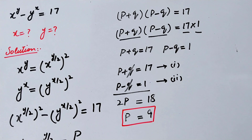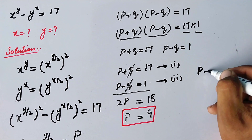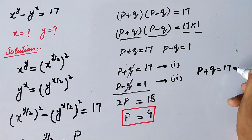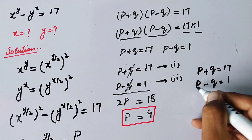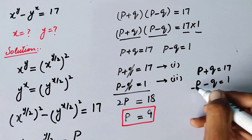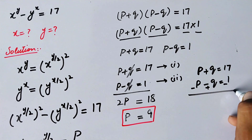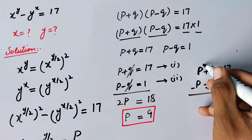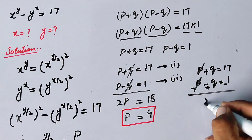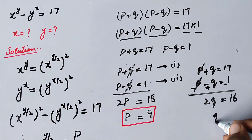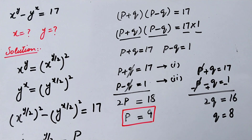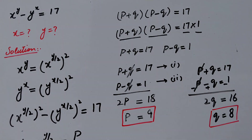Now we find Q by subtracting the equations. P+Q = 17 minus P−Q = 1: the signs flip, P and −P cancel, leaving 2Q = 16, so Q = 8.